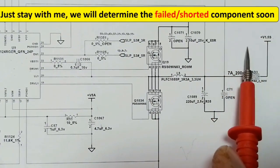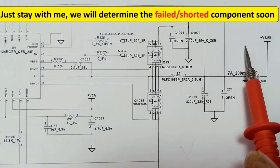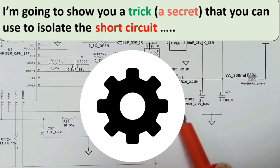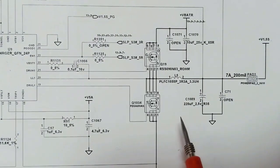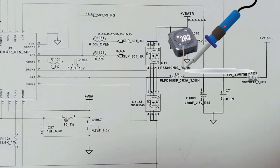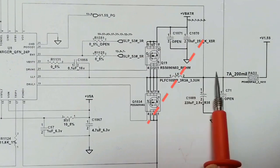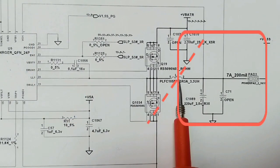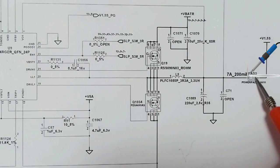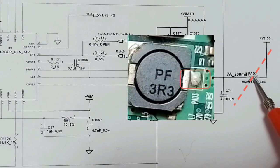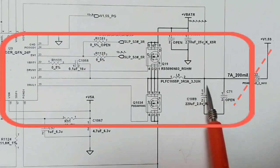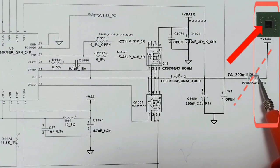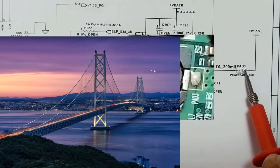Now I'm going to show you a trick to isolate the short circuit. We can remove the inductor from the motherboard, or we can remove the pad. The pad is like a bridge — it separates two circuits. Always pads separate two circuits. So we have the first side where we have capacitors, MOSFET, and IC, and the other side where we have the graphic card.